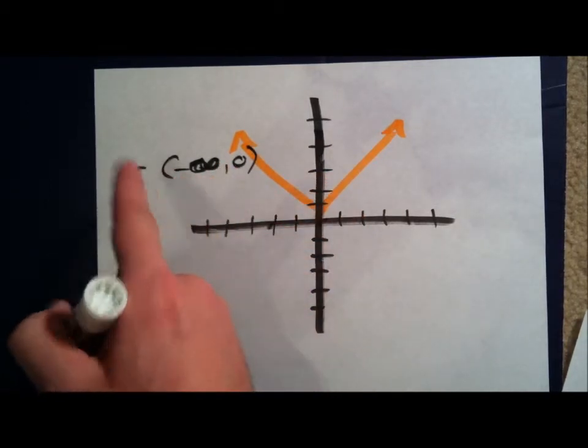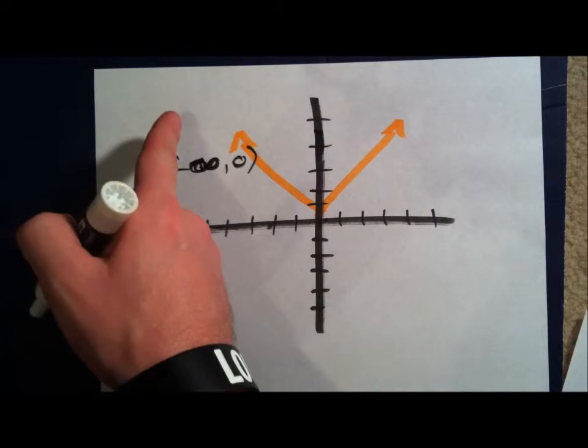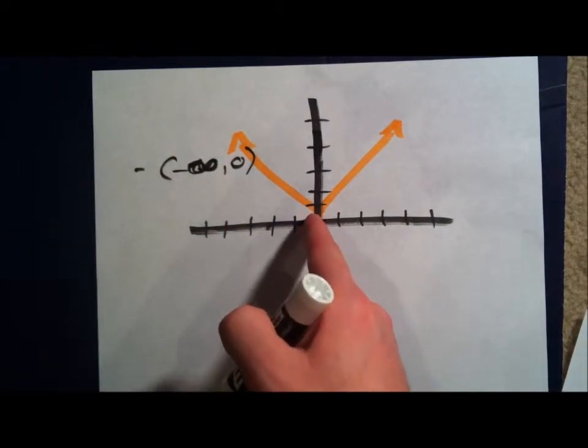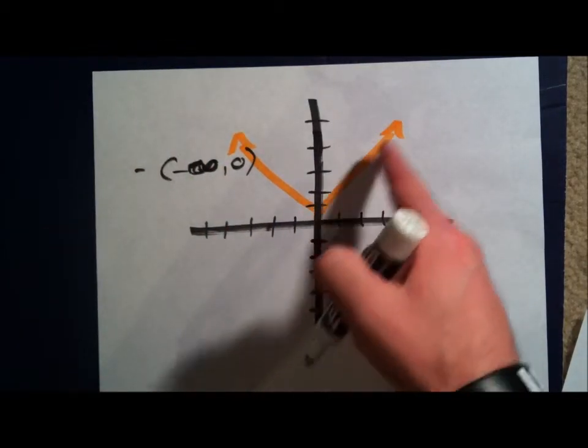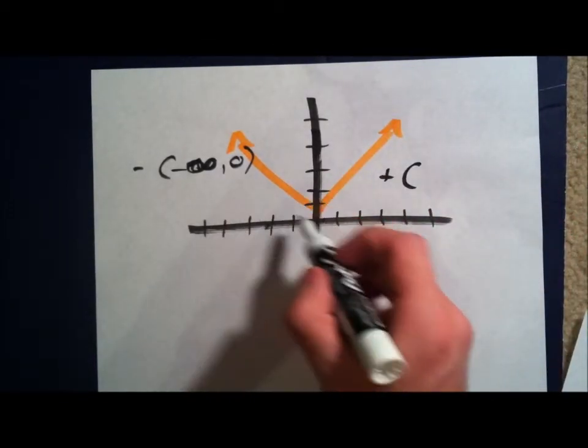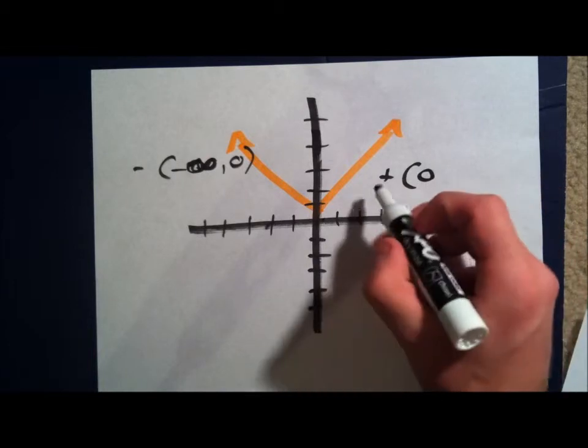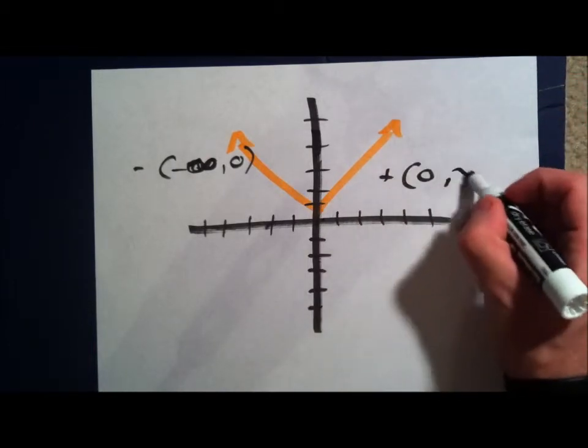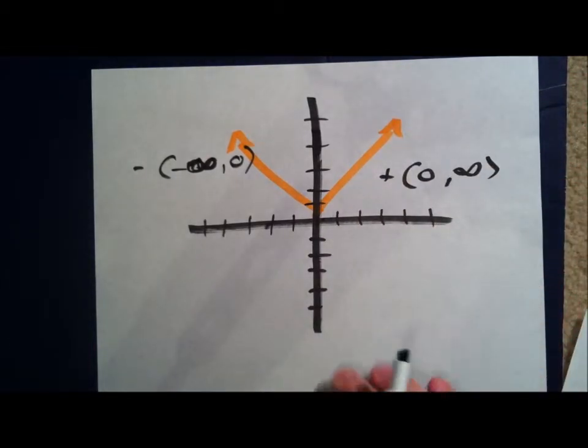So, you get a negative slope from negative infinity all the way to zero. And your other side of the graph, right here, has a positive increase. Which is from zero all the way up here, which is positive infinity.